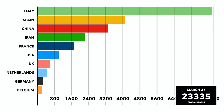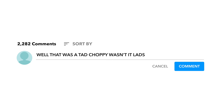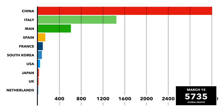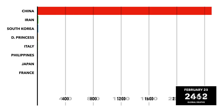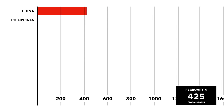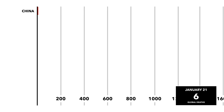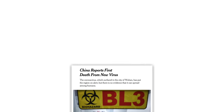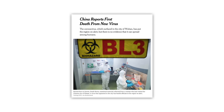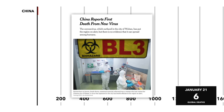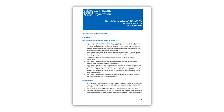Now you've seen the graph shuffle about and you've commented that it's not as smooth as you'd hoped, let's explain what exactly is happening here. The first death was on January 9th in Wuhan, China.